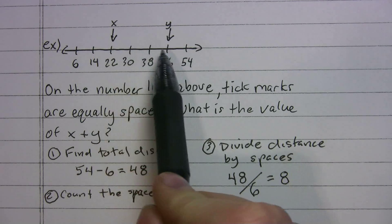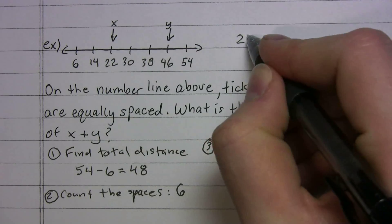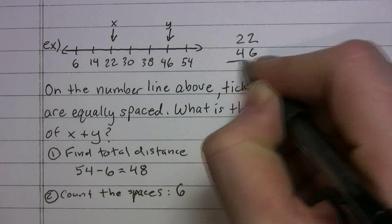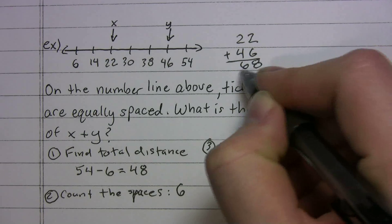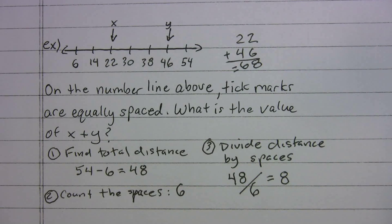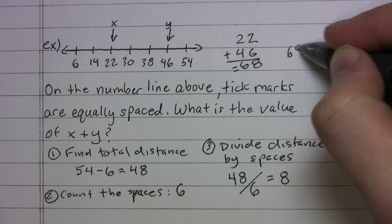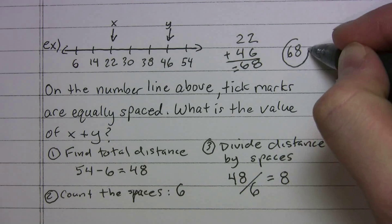X equals 22, Y equals 46. And we'll just do 22 plus 46, grand total of 68. So that's our sum. 68 would be your answer. And if this was a grid in, you'd grid in 68 come test day.